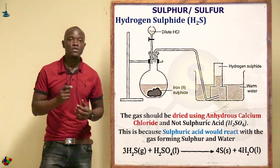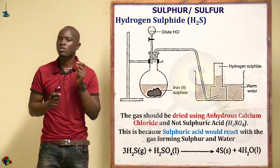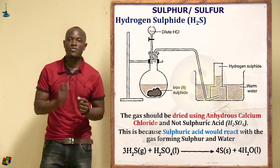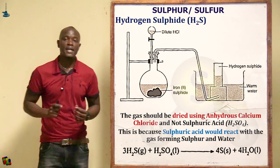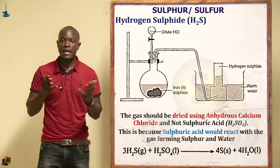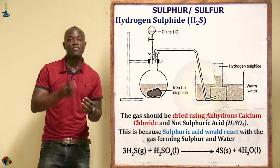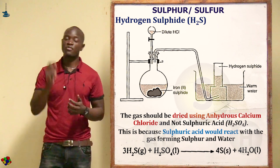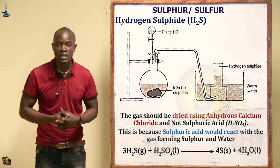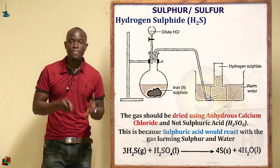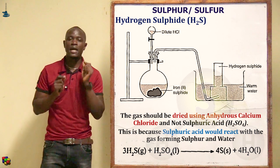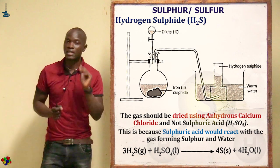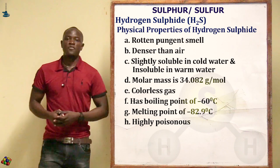This gas can be dried using anhydrous calcium chloride. You should never use concentrated sulfuric acid to dry hydrogen sulfide, because concentrated sulfuric acid will oxidize hydrogen sulfide to form sulfur and water molecules. So it should only be dried using anhydrous calcium chloride and not concentrated sulfuric acid.